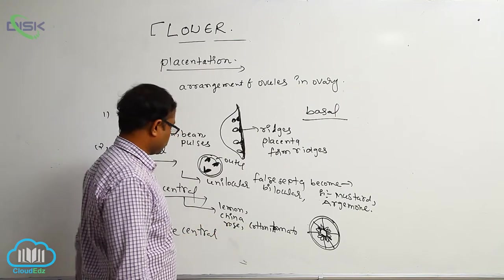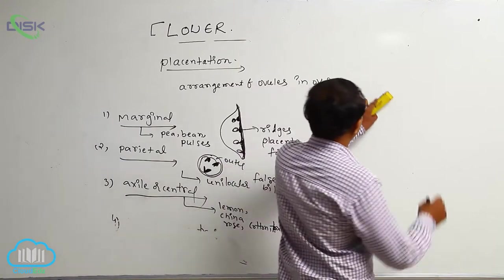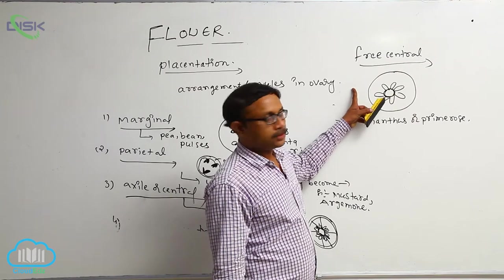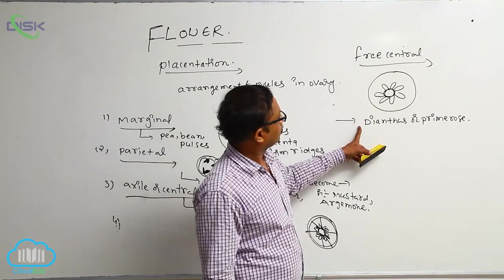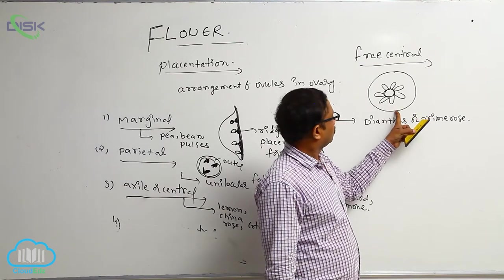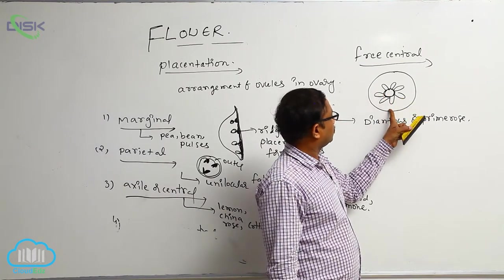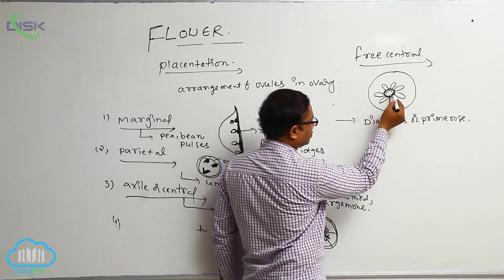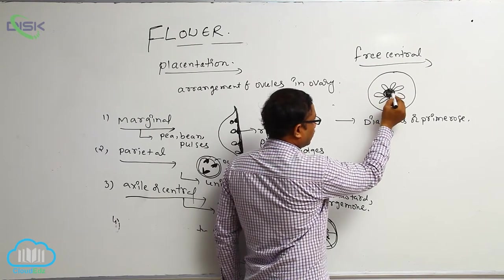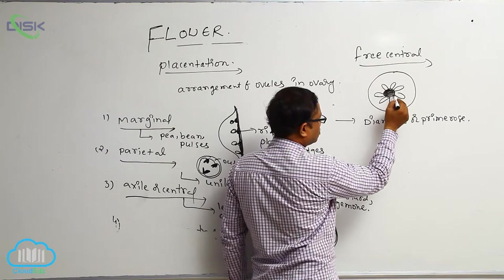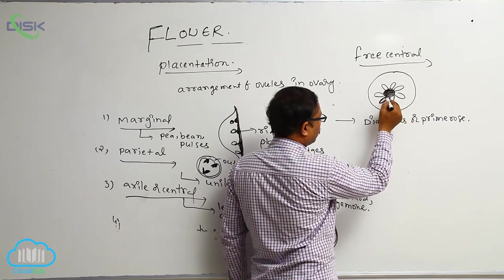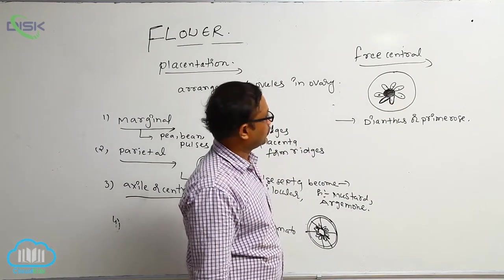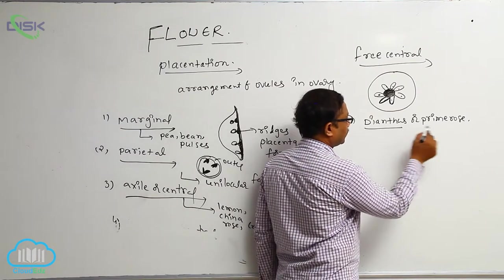In Free Central Placentation, septa are absent. Ovules are connected to the central axis of the ovary without any septa — they are freely connected to that central axis. Examples of free central placentation include Dianthus and Primrose.